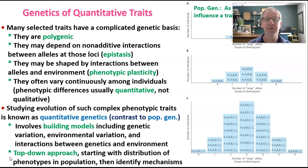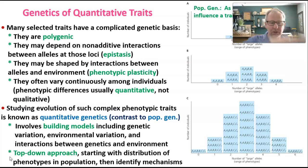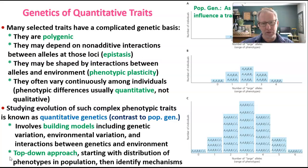Quantitative traits often vary continuously among individuals, and when that continuous variation is graphed it usually forms a bell curve — a broad range of variation. That continuous variation is usually quantitative, meaning it's based on many different genes and alleles, not qualitative, which would be just black and white distinctions. So there are several different genetic influences and interactions that produce these complex quantitative traits.